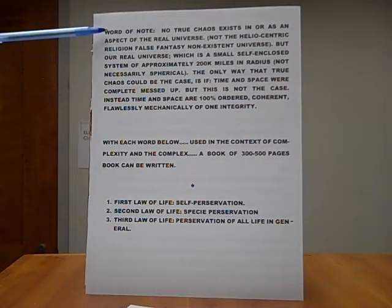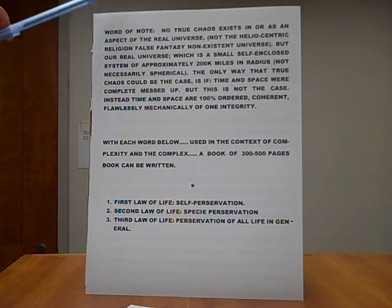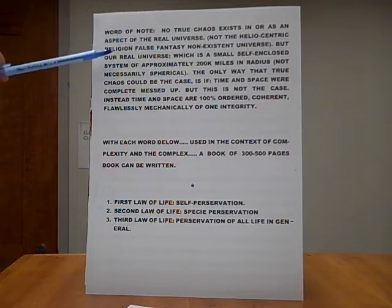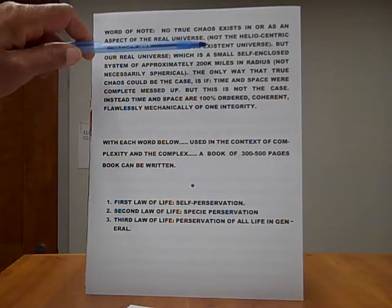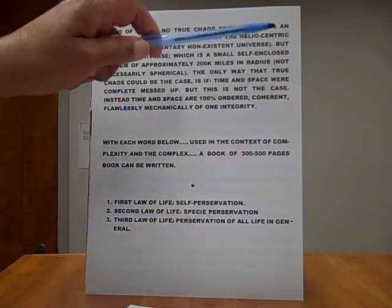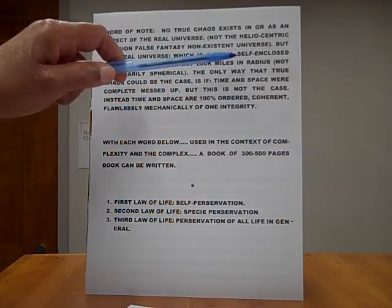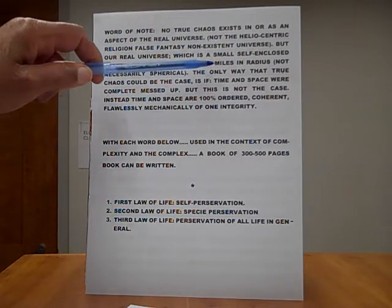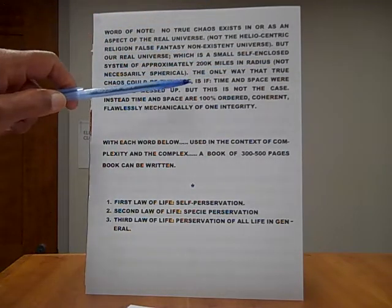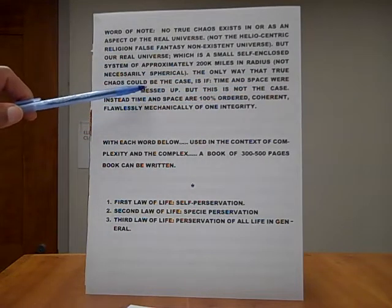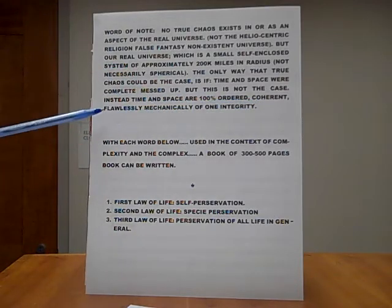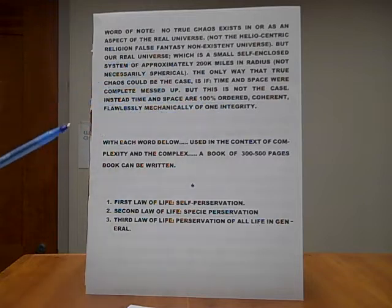And here's a word of note, a word of note. No true chaos exists in or as an aspect of the real universe. I do not speak of the heliocentric religion, false fantasy, non-existent universe of galaxies which don't exist, like years which don't exist, and none of these things exist. But our real universe, which is a small, self-enclosed system of approximately 200,000 miles in radius, not necessarily spherical, the only way that true chaos could be the case is if time and space were completely messed up. But this is not the case. Instead, time and space are 100% ordered, coherent, flawlessly, mechanically, of one integrity.